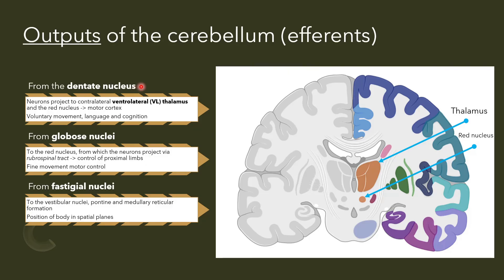The dentate nucleus is also involved in the regulation of language and cognition. Neurons located in the globose nuclei project mainly into the red nucleus, which is a structure in the midbrain neighboring the substantia nigra — a famous structure affected in Parkinson's disease. From the red nucleus there is a tract of projections called the rubrospinal tract, which helps with regulation and control of proximal limbs for finer movement. Finally, from the fastigial nuclei, neurons project to the vestibular nuclei, participating in regulating the position of the body in different spatial planes.